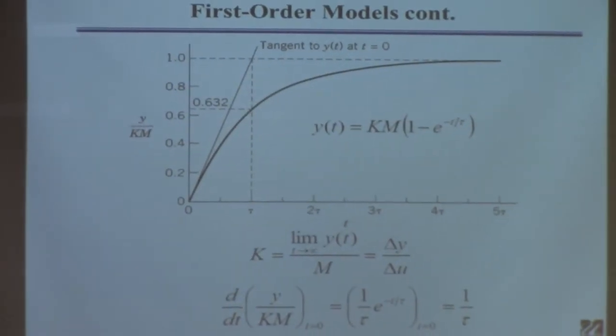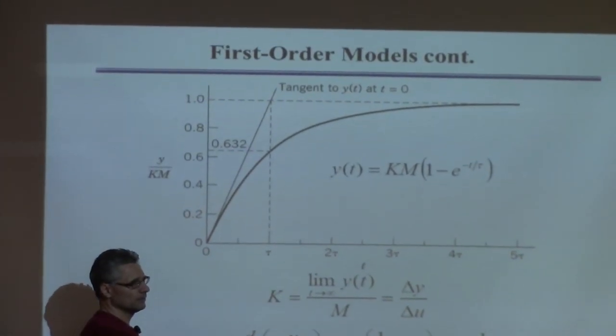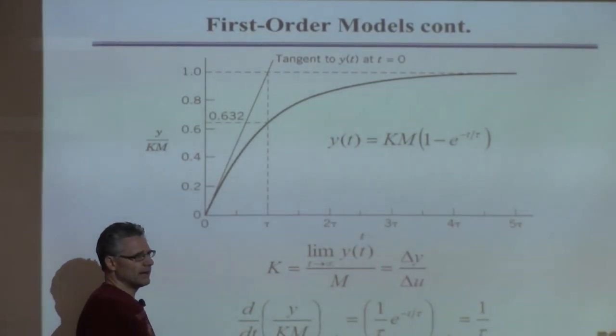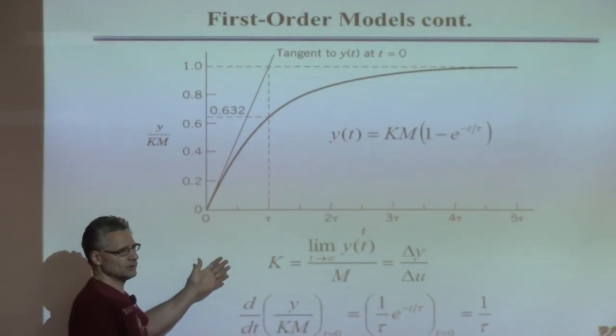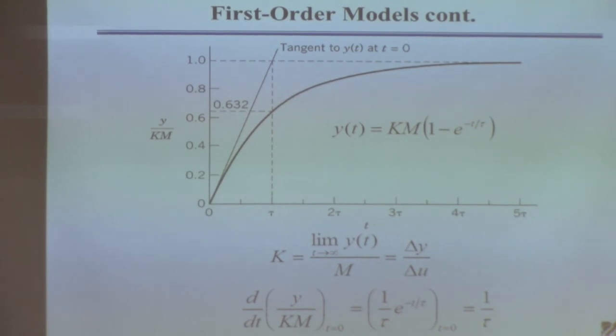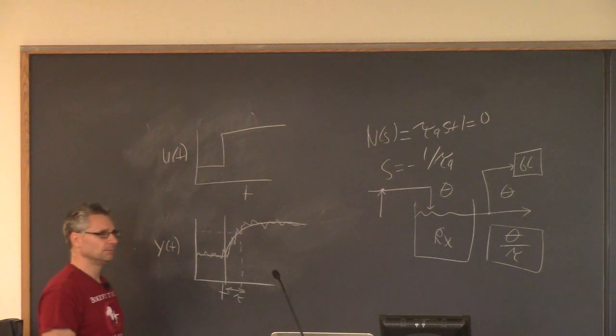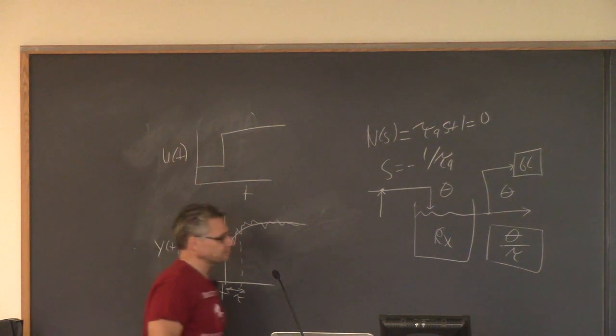So if someone said, how do you find a time constant for a first order system? You would do it by finding this. There's nothing magical about 63.2%. You could plug in two tau and you'd find that's 80-something percent. Find when it's 80-something percent, and that's two tau. But people would typically use it when it's tau. So in other words, find the gain like this. Divide the amount the output changed divided by the amount you changed the input. Find the gain. And then find the time constant from the 63%. Then you have your model. Then it would be a good idea to plot your model versus the data to see if it agreed. Obviously, your model's going to look a lot smoother.